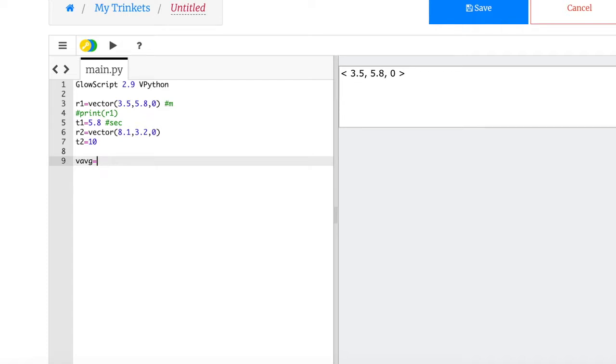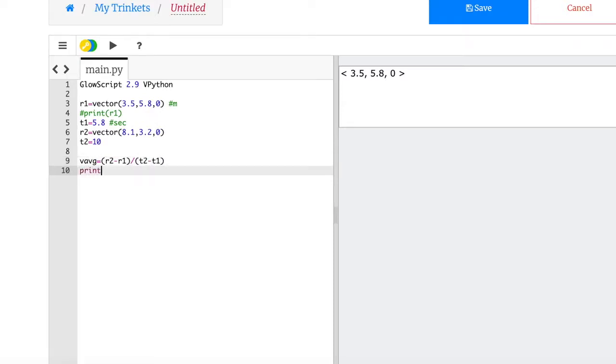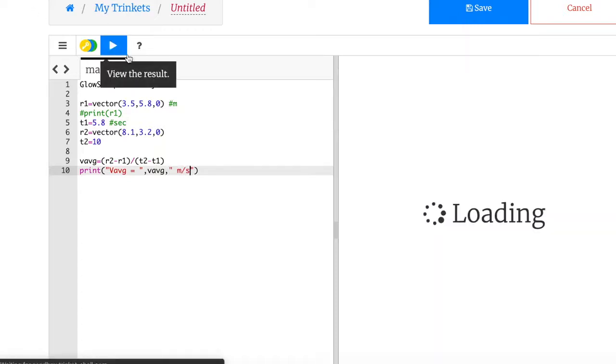And you can use whatever variable you want here. I'm going to say v average, I can't really do a subscript. And so this is just going to be r2 minus r1, I'm really just typing in the equation, divided by t2 minus t1. Now I'm going to say print v average equals v average meters per second.